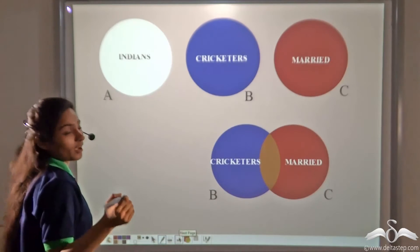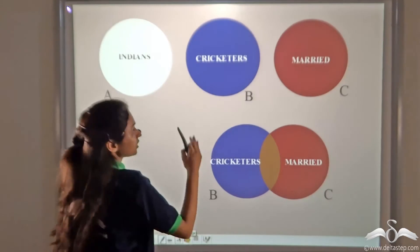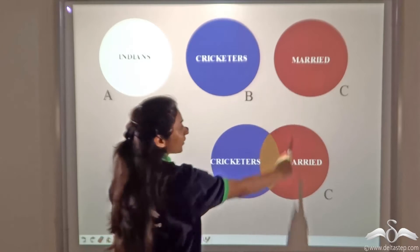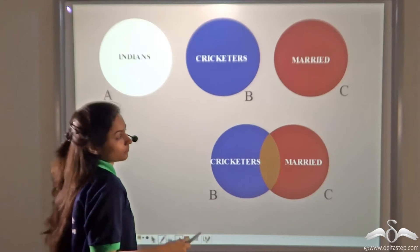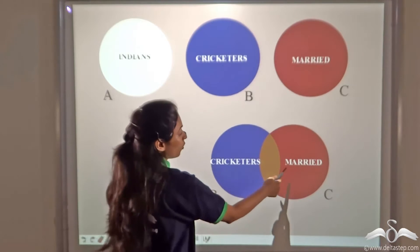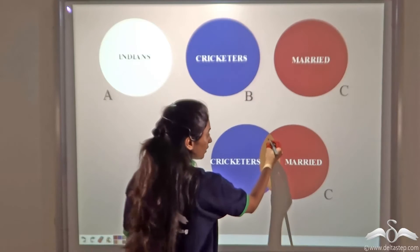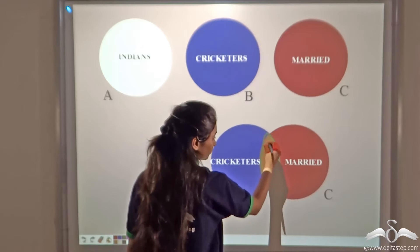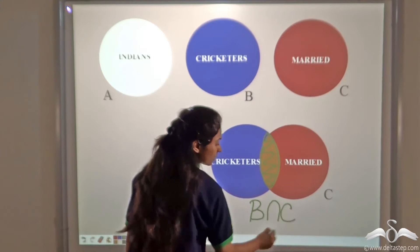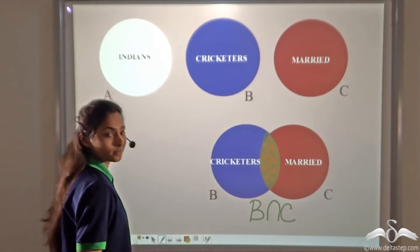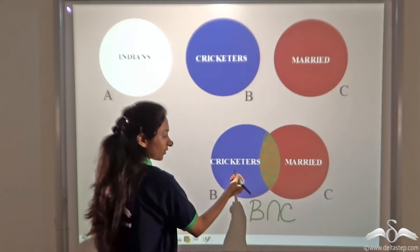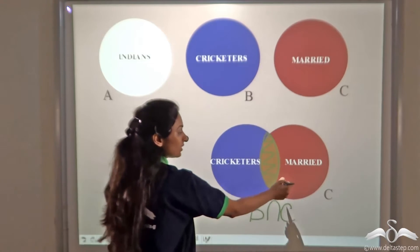Now what if I ask you about people who are cricketers as well as married — that is, married cricketers? You will take set B and set C and find out people who are common to both. This overlapping part gives you B intersection C, which denotes people who are cricketers as well as married. They belong to both set B and set C.